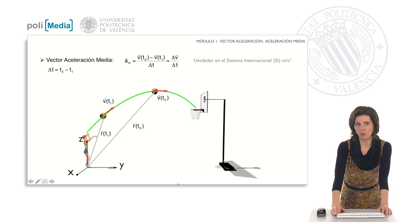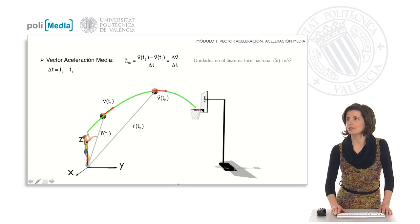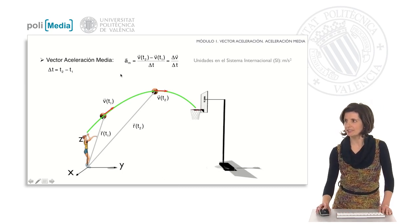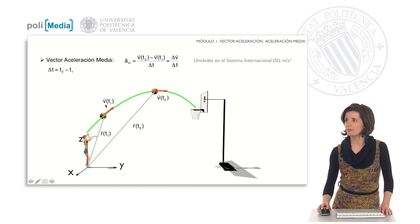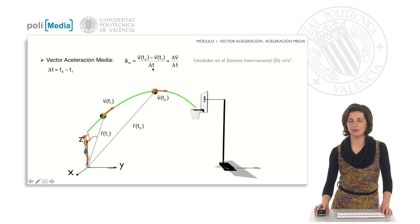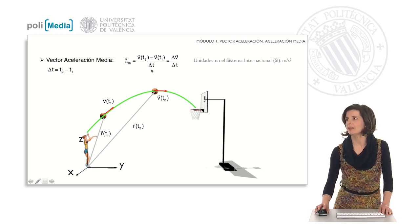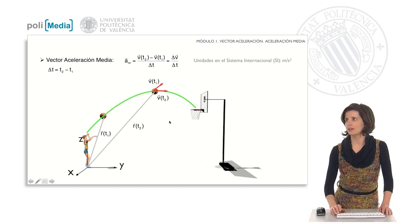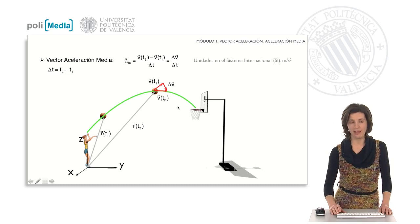If these changes are evaluated in an incremental time interval Δt, we will discuss the average acceleration vector. In the drawing we see the ball at two different instants, at instant t₁ and at instant t₂, with the velocity vector drawn at each. The average acceleration is the velocity vector at the final instant minus the velocity vector at the initial instant, divided by the elapsed Δt, and it is measured in meters per second squared. Subtracting the two velocity vectors geometrically gives the vector increment of v, which determines the direction of the average acceleration vector.